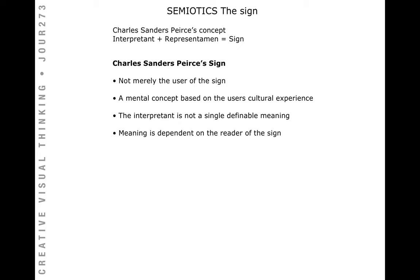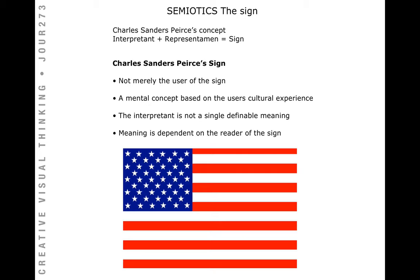It wasn't just about the user of the sign — Peirce didn't feel that the sign was the same to all people. That mental concept was based on each user's cultural experience. The interpretant is not a single definable meaning; that meaning has to be dependent on the reader of the sign. For example, when we look at the American flag, it holds a certain meaning to us — but does it have the same meaning to someone not from this country?